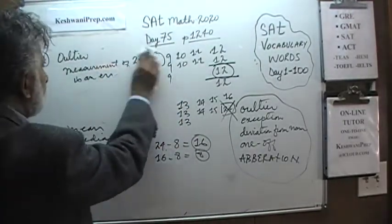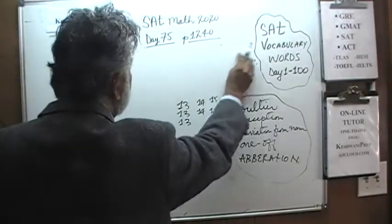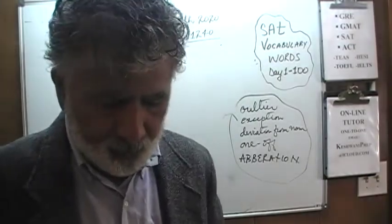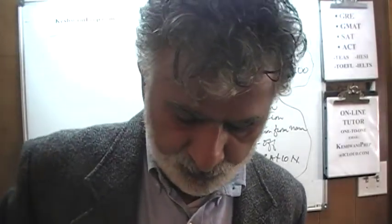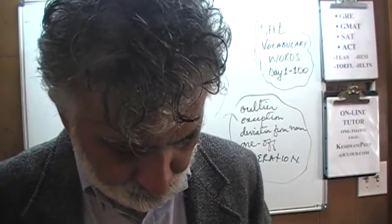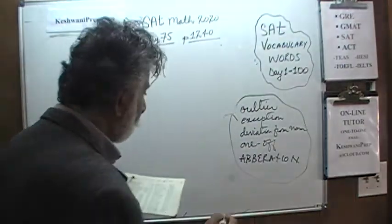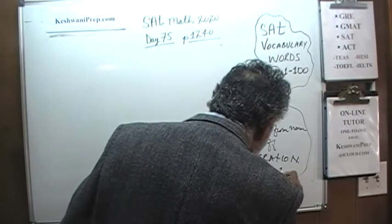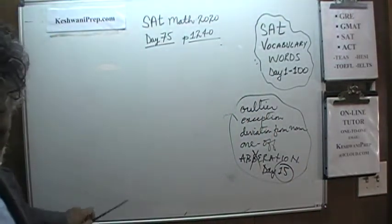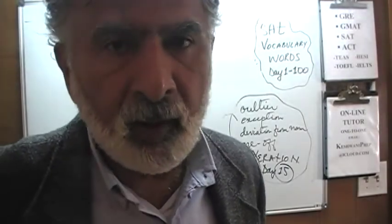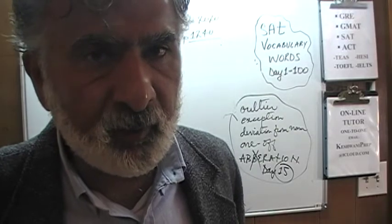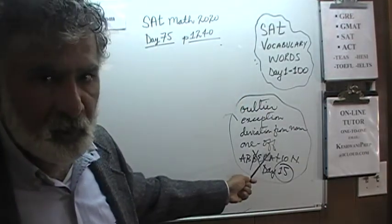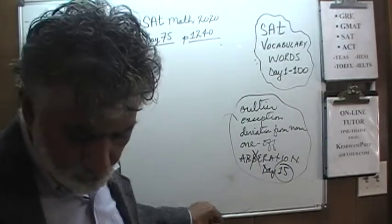Before going to number 15, let's learn the word 'aberration' — it only has one B, I misspelled it. We learned it in our vocabulary lessons. I always remind you to work on your vocabulary, which plays a major role in the second half of the exam. Just search SAT vocabulary words day number 15 and the video will pop right up — watch it and learn useful words for the SAT.